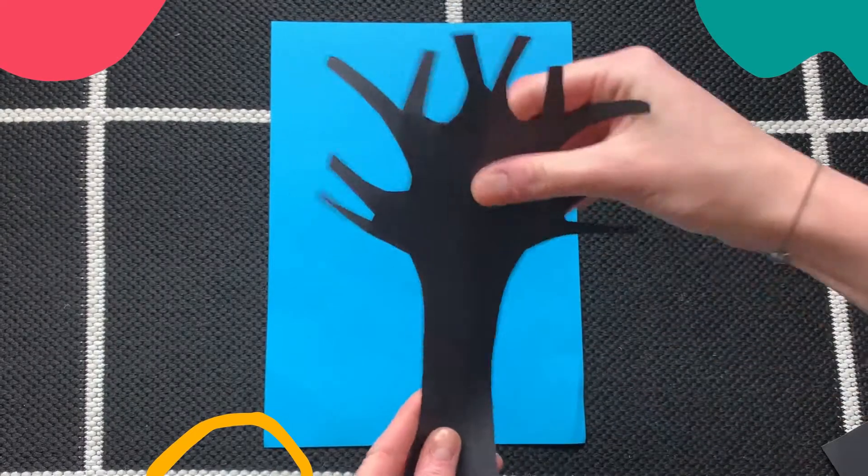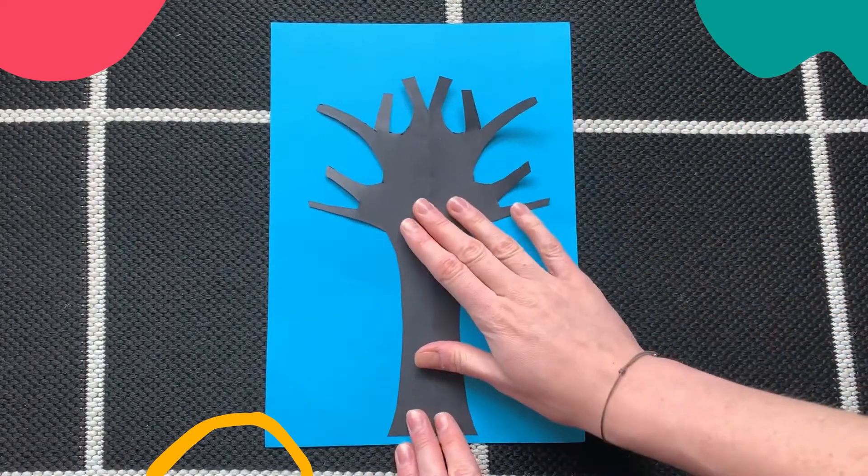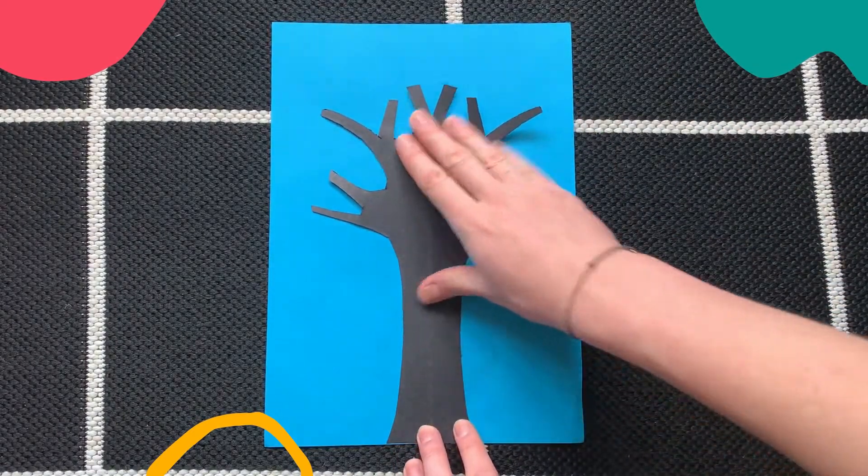So once you've done that and you've got your tree, you need to glue this down on a piece of paper.